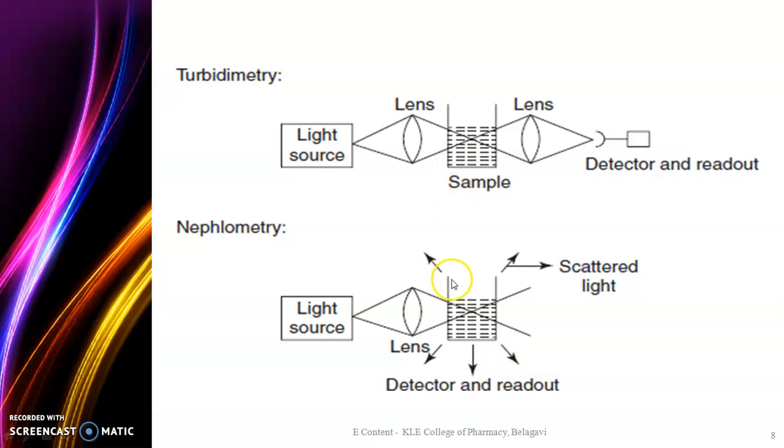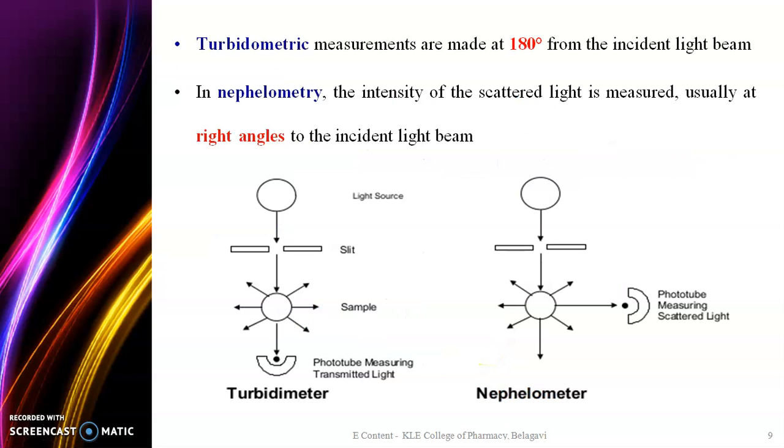The difference between both techniques is the detector position. In turbidimetry the detector is placed at an angle of 180 degrees whereas in Nephelometry it is placed at an angle of 90 degrees. This is the basic difference in the measurements.